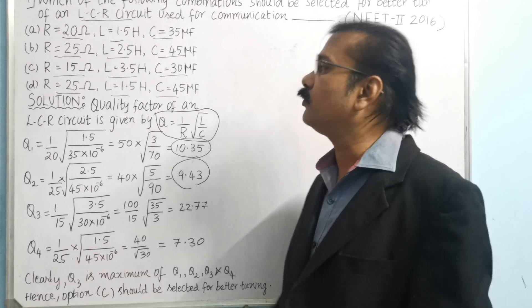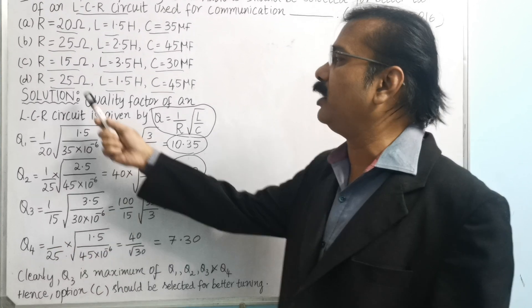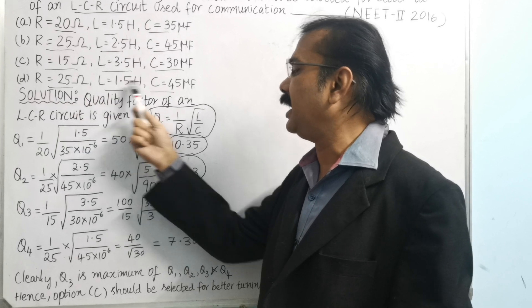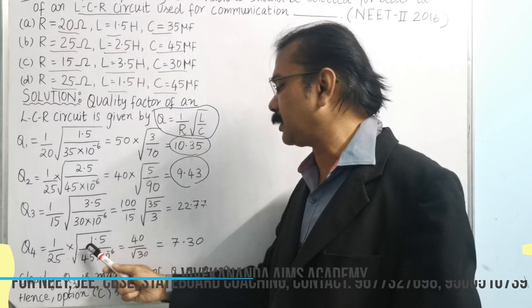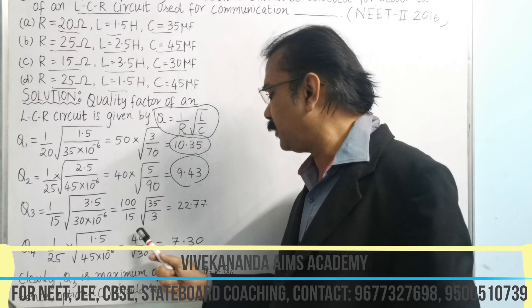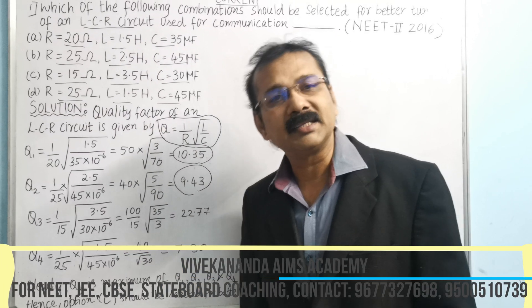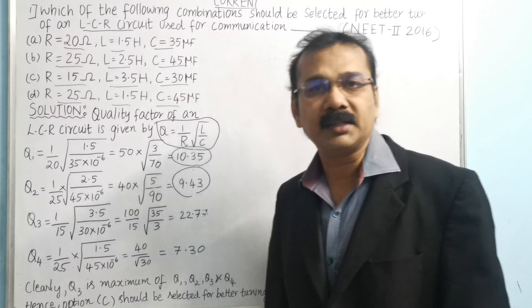Then finally Q₄ — the value of R is 25, and substituting L and C, we get Q₄ = 7.30.